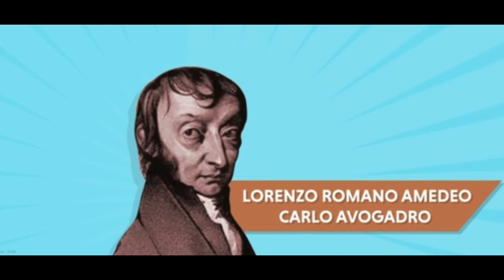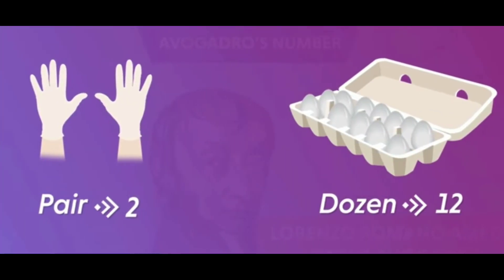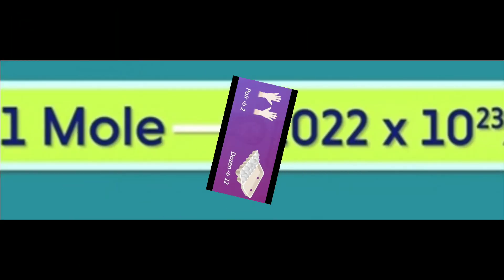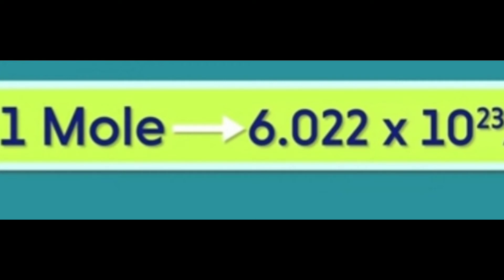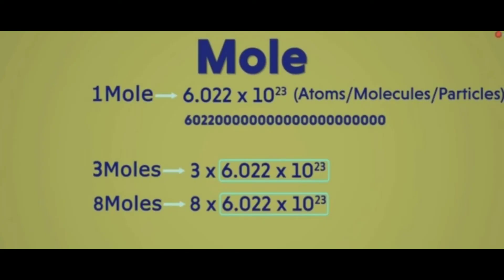Avogadro's number is just a number used to represent quantities. It is similar to how we use the word 'pair' to represent the number 2, or 'dozen' to represent the number 12. Similarly, Avogadro's number is the term used to represent 6.022 × 10²³ particles, which is taken as 1 mole. So 1 mole equals 6.022 × 10²³ particles. Then what do you mean by 3 moles? That is 3 × 6.022 × 10²³ particles. What do you mean by 8 moles? That is 8 × 6.022 × 10²³ particles.